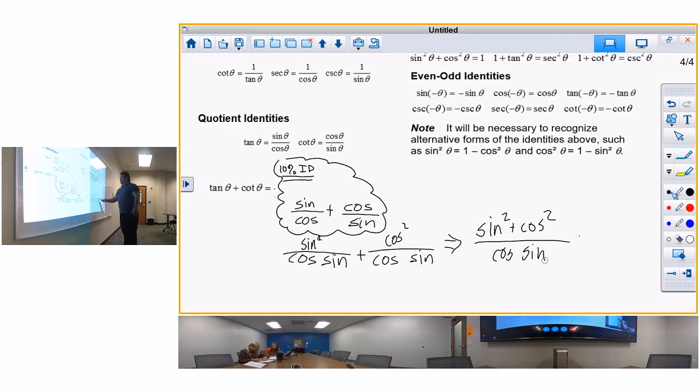How many times will cosine go into cosine sine? Sine. Sine times sine is sine squared. How many times will sine go into cosine sine? Cosine. Cosine times cosine is cosine squared. So this problem we just rewrote as cotangent and we got sine squared plus cosine squared over cosine sine or sine cosine.